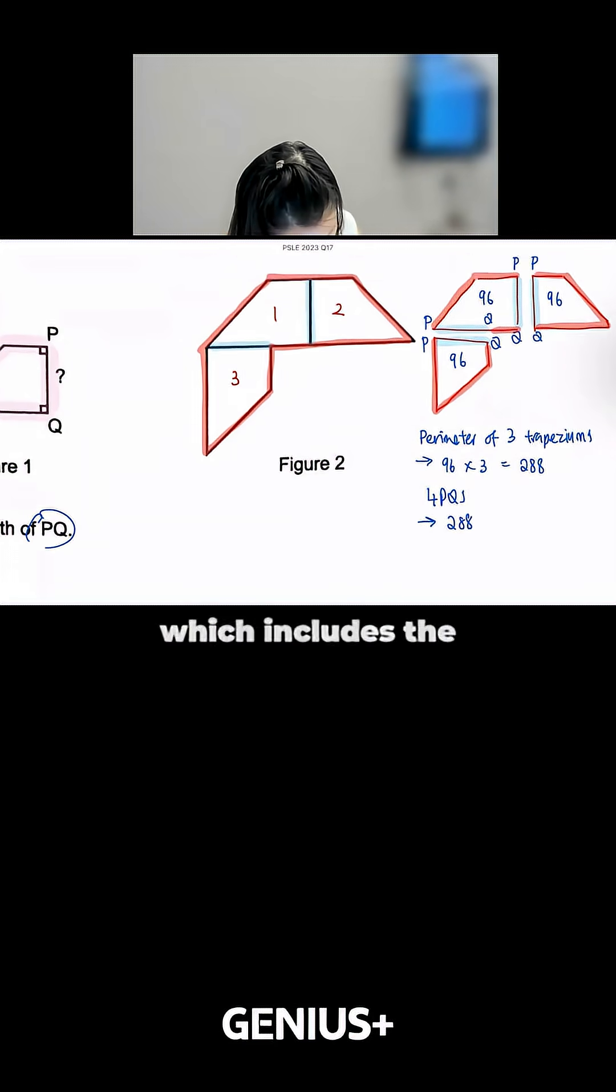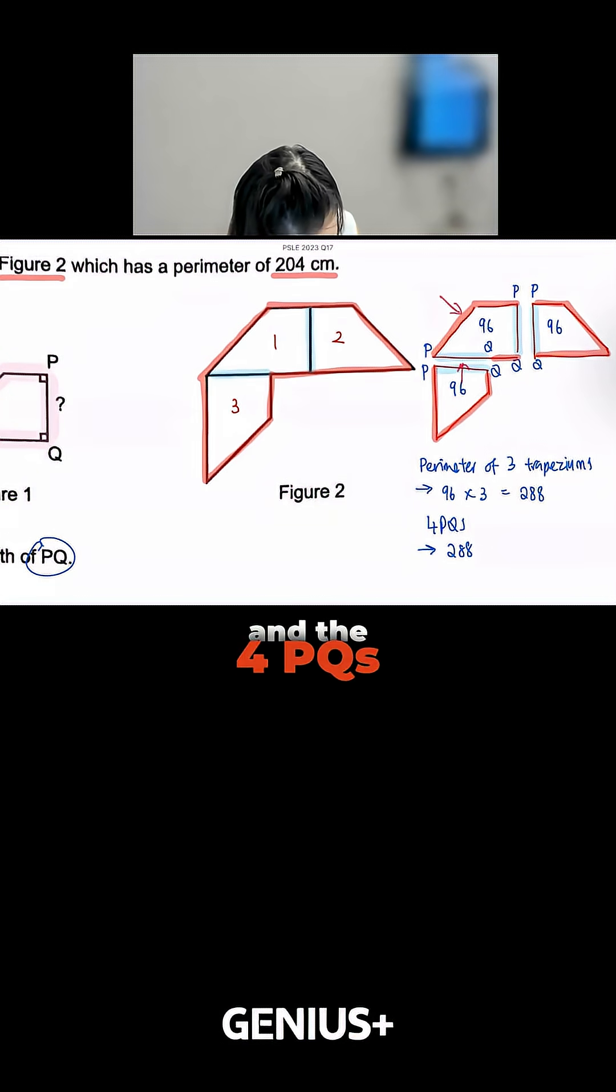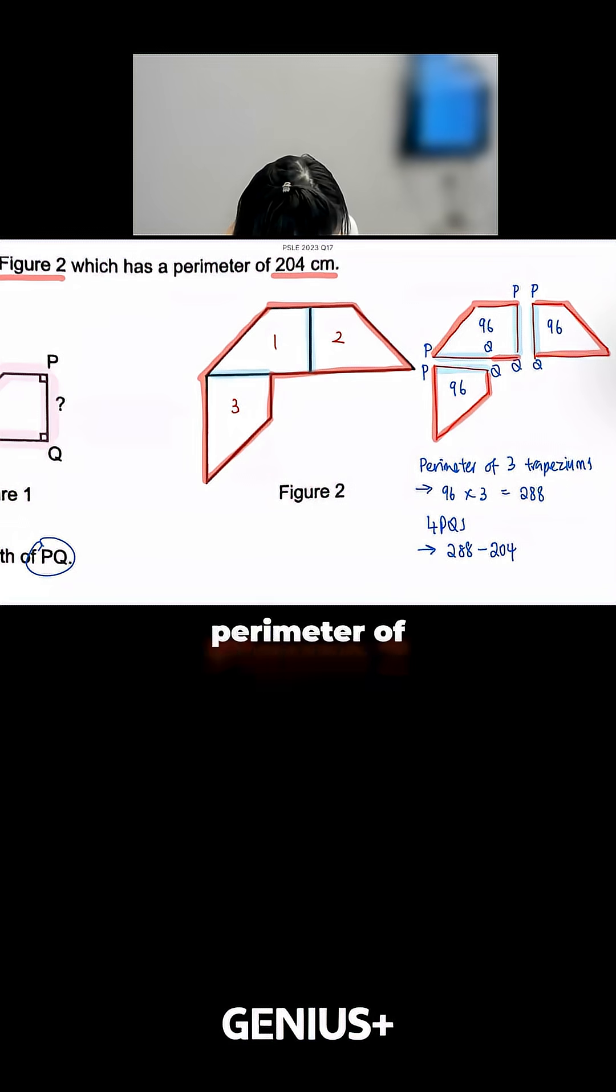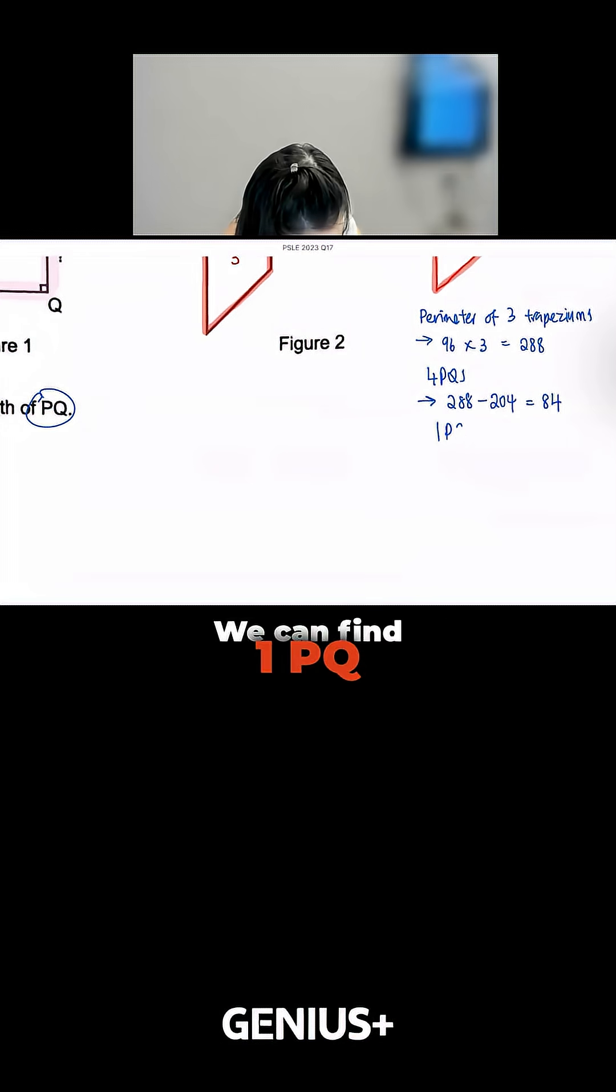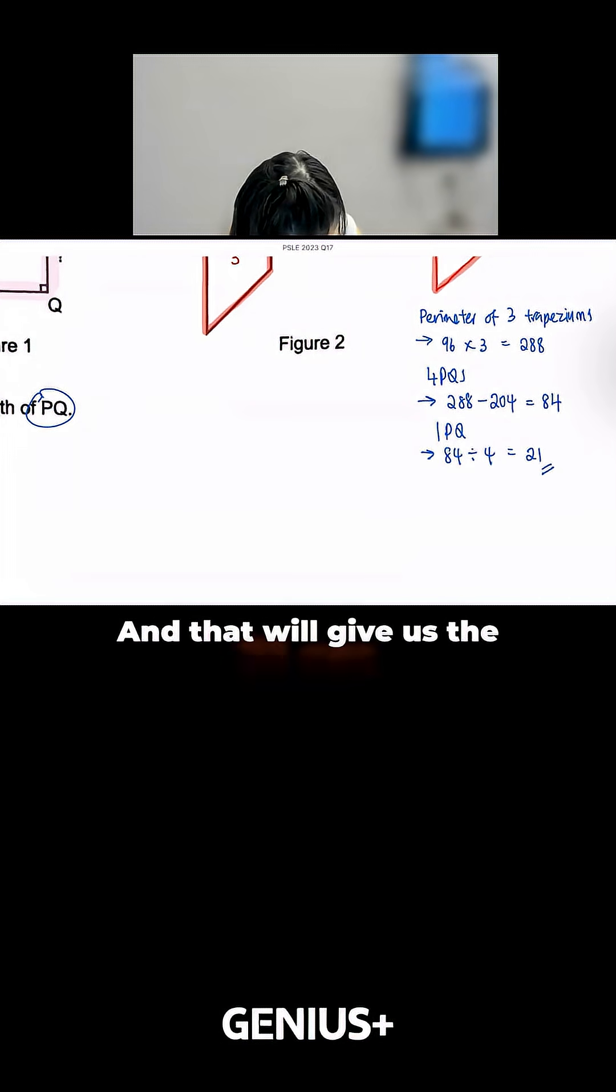We will take 288, which includes the red and the 4 PQs. So we minus away the red part, which is the perimeter of Figure 2, and that will give us 84. We can find 1 PQ. So we will just take 84 divided by 4, and that will give us 21 cm.